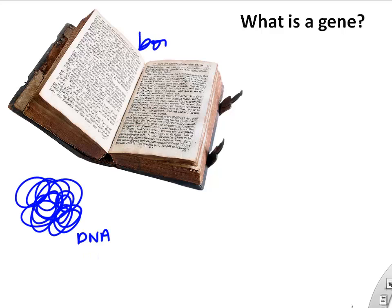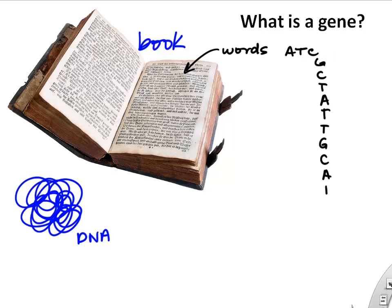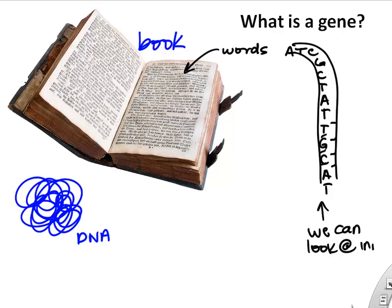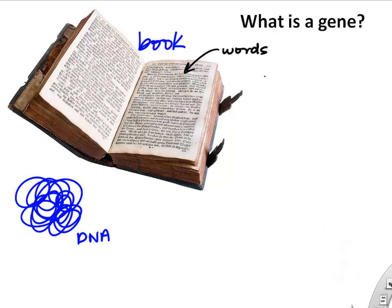You've probably heard the term gene before, but what is a gene and what's an easy definition? If we use the book analogy — if the book is your DNA — then all those words are the nucleotides. The words would be the nucleotide sequence: A, T, C, G, G, C, T. A lot of times we'll just look at a single strand of the DNA because it's easier and it tells us the same information.